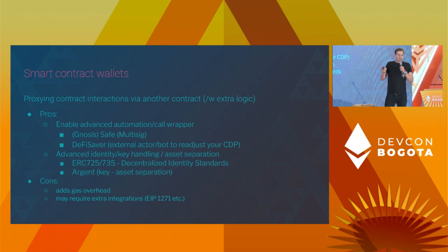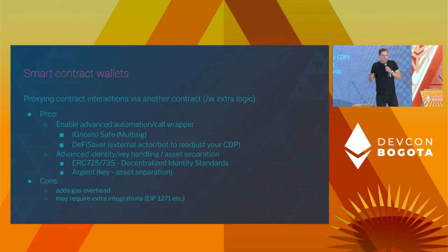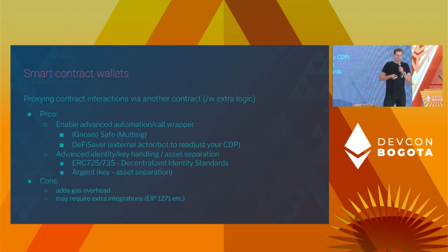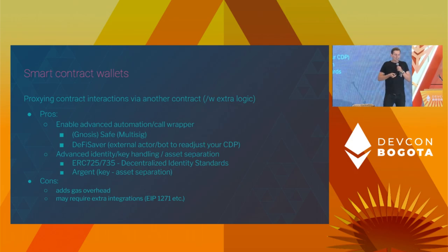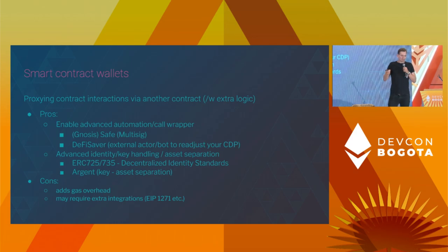You can create automations or call wrappers across multiple contracts and do more things in one transaction than you would otherwise be able to do. A good example is Gnosis Safe, or Safe as it was recently renamed, which uses it for multi-sig interactions. Another great example is the DeFi Saver smart contract wallet, which makes it easier to operate in the DeFi ecosystem. Another example would be general identities — there's a lot of talk about decentralized identity standards, and you can use multiple keys in one smart contract and use the contract as your on-chain identity. There are attempts around DID, and also the Argent wallet, which does a very similar thing.